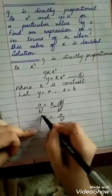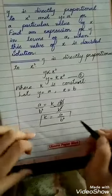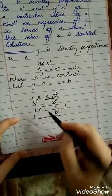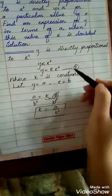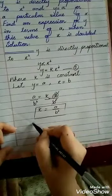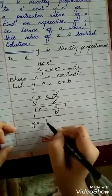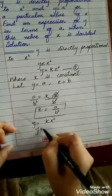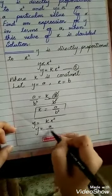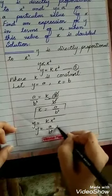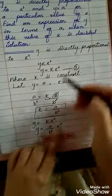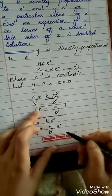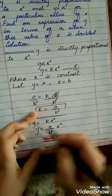Now this value of K we will place in equation number 1, which is Y is equal to KX squared. So Y is equal to K value — which is A by B squared — into X squared. This is now equation number 2.